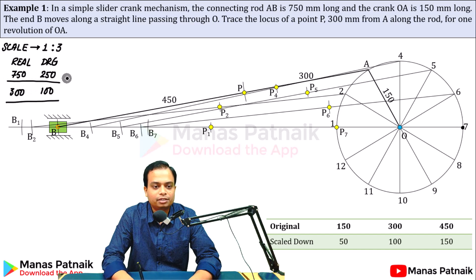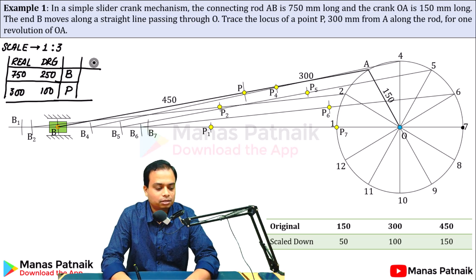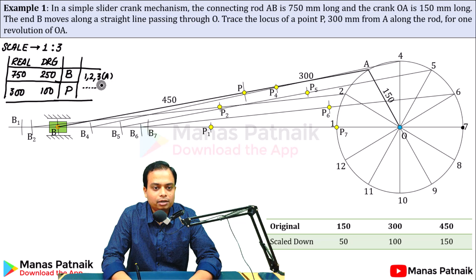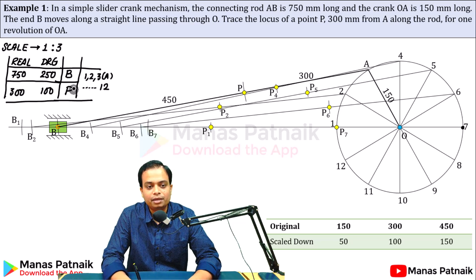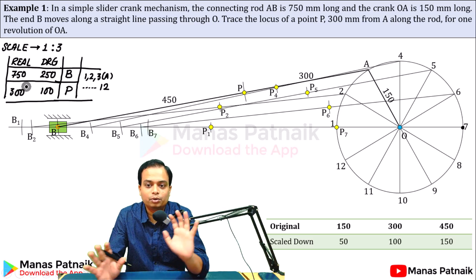To clarify the process: for all crank positions from 1 through 12, take each position point as the center. Use an arc of 250 mm (drawing) to locate B, and an arc of 100 mm (drawing) to locate P. These correspond to the scaled-down values of 750 mm and 300 mm respectively.